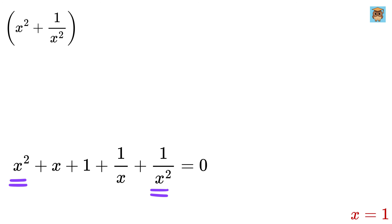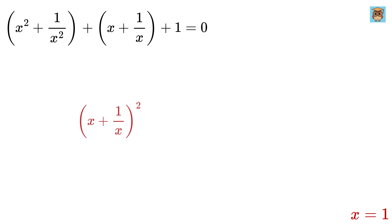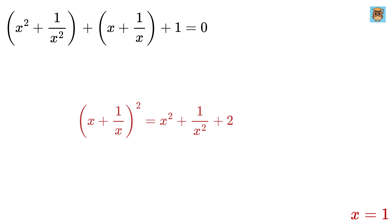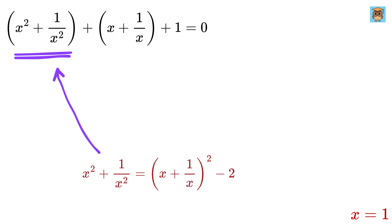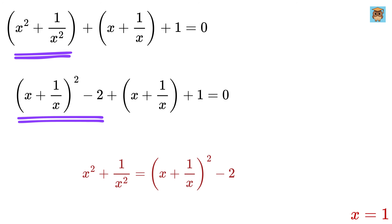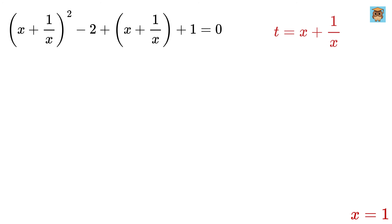Group the terms as (x² + 1/x²) and (x + 1/x) together. Notice that if we take (x + 1/x) and square it, we get x² + 1/x² + 2, so x² + 1/x² equals (x + 1/x)² minus 2. Substituting this back, we get (x + 1/x)² minus 2 plus (x + 1/x) plus 1 equals 0. Now let x + 1/x equal a variable t.